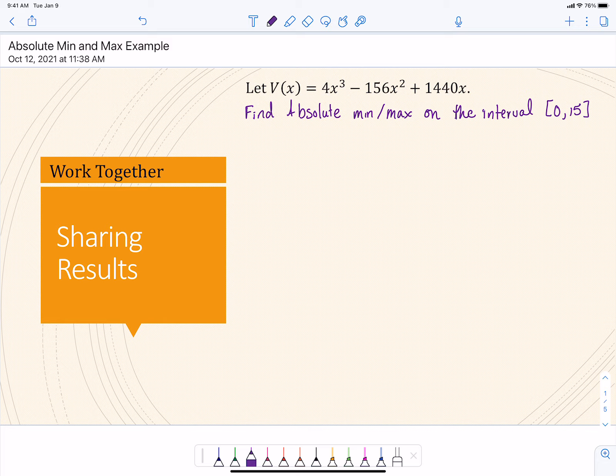All right, so let's take a look at this question here. We've got V(x), excuse me, is equal to 4x³ - 156x² + 1440x. And we want to find the absolute min and max on the interval 0 to 15.